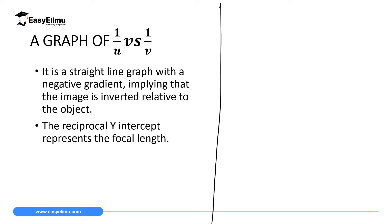You are going to use this graph to determine the focal length and the radius of curvature of either a concave mirror or a convex mirror. The first graph you will draw is a graph of 1 over u against 1 over v. For a concave mirror, this graph is a straight line with a negative gradient. It obeys the linear equation y equals mx plus c, where y is plotted on the y-axis, m is the gradient, x is plotted on the x-axis, and c is the y-intercept.